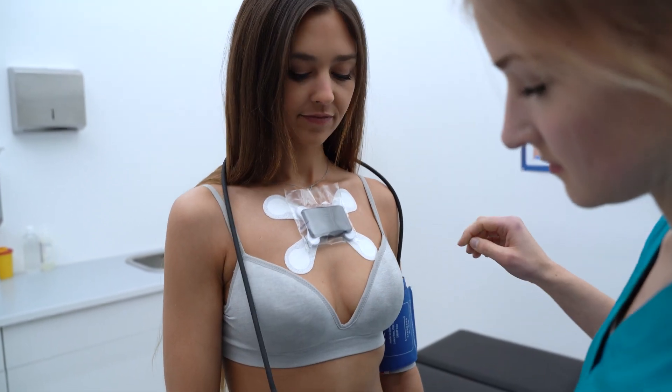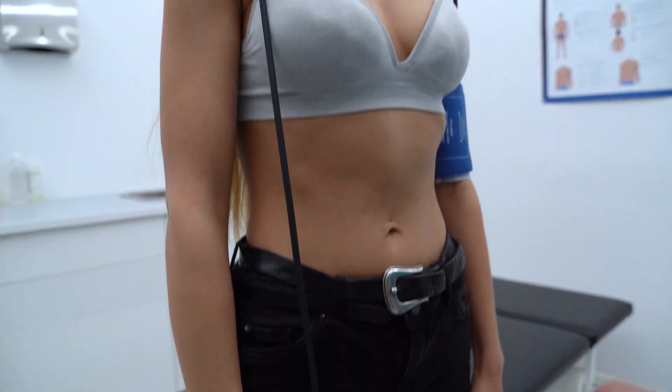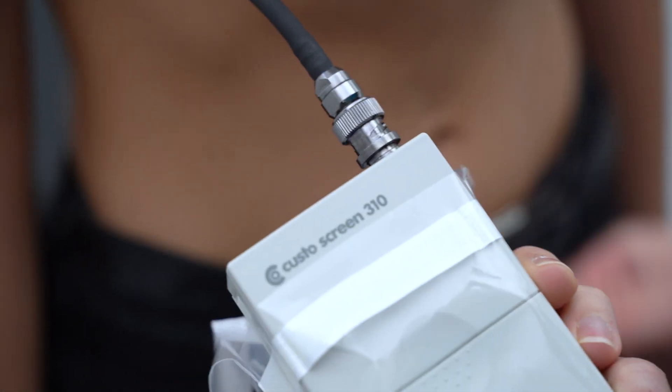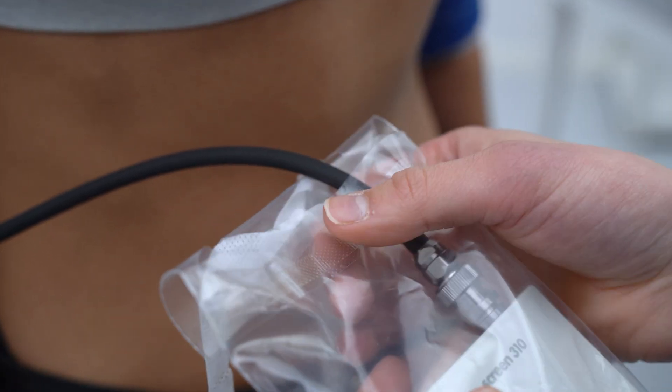Place the cuff tube from the left over the right shoulder down to the hip. Connect the tube to the CustoScreen and fix the measuring device by using the CustoClean Hygiene Bag.